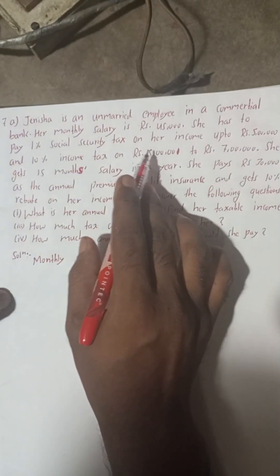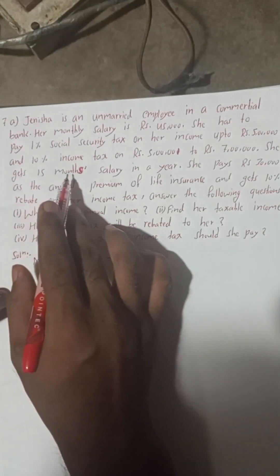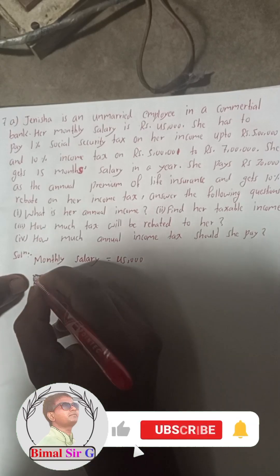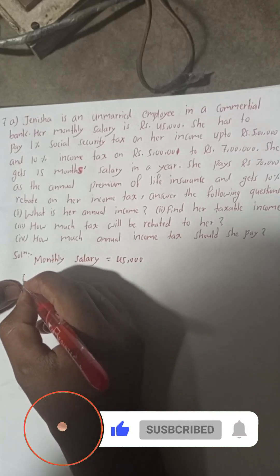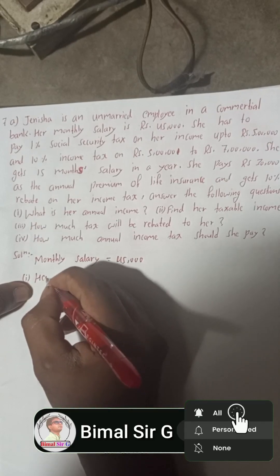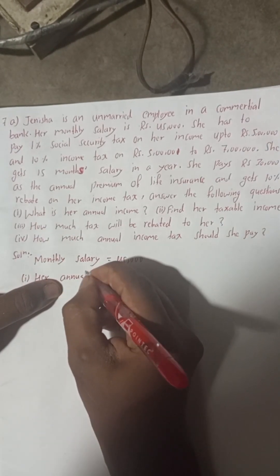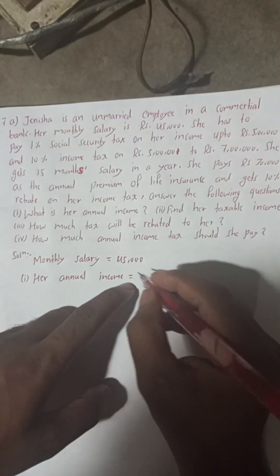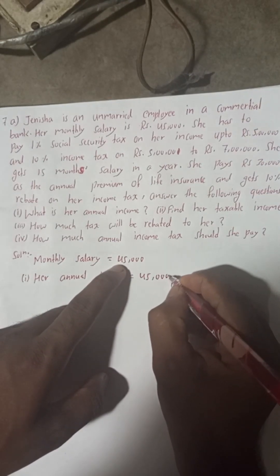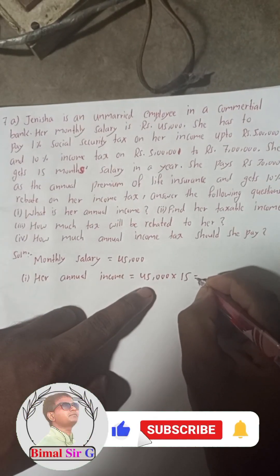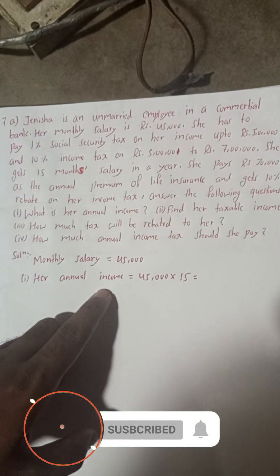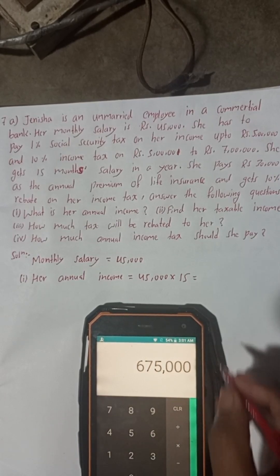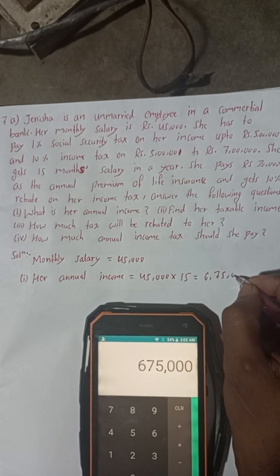She gets 15 months salary in a year. So her annual income is equal to monthly salary 45,000 multiplied by 15, which gives us 6,75,000.